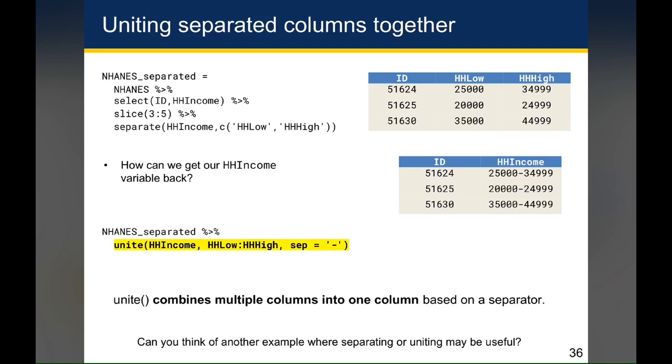But in the unite function, you do have to provide it a separator because if you don't provide it a separator, it doesn't know how you want the elements to be united. And so by telling it here that I want the separator to be a dash, it knows that when it combines HH low with HH high to insert a dash in between those values. So unite is useful for combining multiple columns into one column based on a separator.